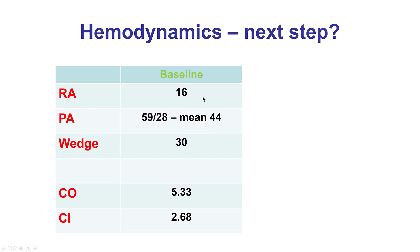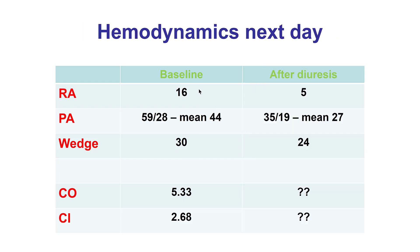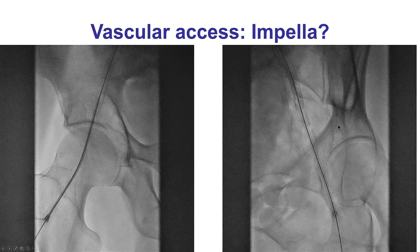Given the elevated hemodynamics, it was decided to stop the procedure. The patient was diuresed and then returned a couple of days later with significantly improved hemodynamics. RA pressure was down to 5, wedge pressure decreased from 30 to 24, and mean PA pressure decreased from 44 to 27 mmHg.